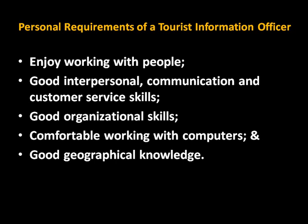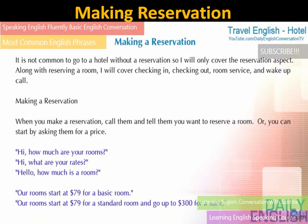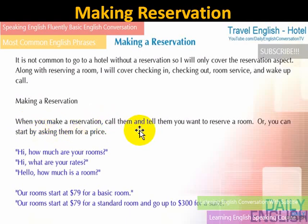Now we have making a reservation. If you want to book a room in a hotel, you might start by asking about prices. You can say: 'Hi, how much are your rooms?' 'Hi, what are your rates?' 'Hello, how much is a room?' The receptionist might answer: 'Our rooms start at $79 for a basic room and go up to $300 for a suite.'